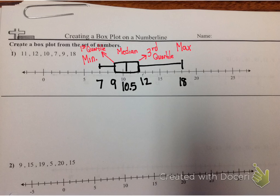The most important thing to know about this is that one quarter of your data is between 7 and 9. Another quarter of your data is between 9 and 10 and a half. Another quarter of your data is from 10 and a half to 12. And the last quarter of your data is from 12 to 18.